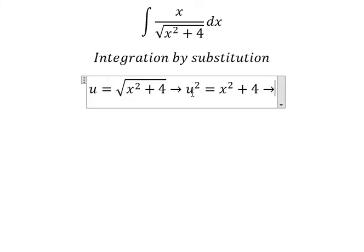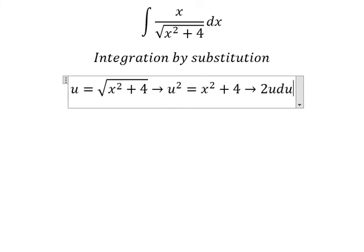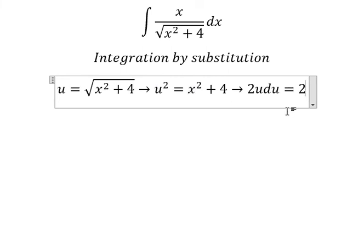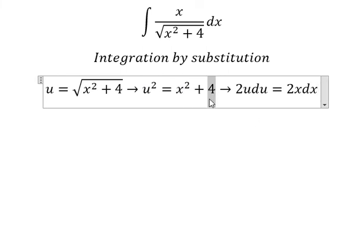Next we differentiate both sides. This one will have 2u. This one will have 2x. This one, that is a constant, so you got zero.